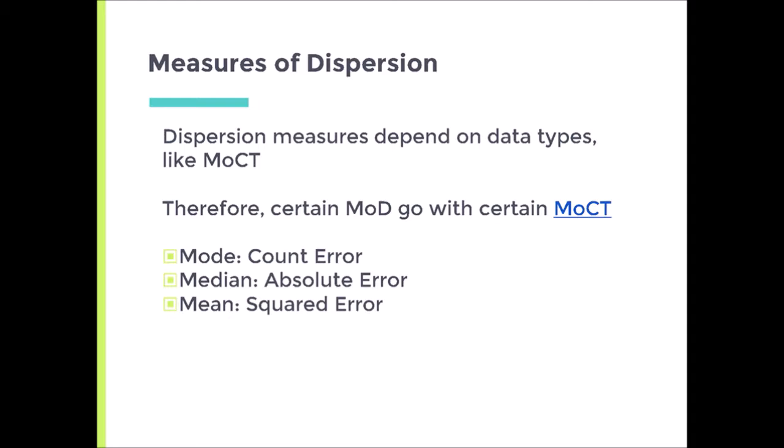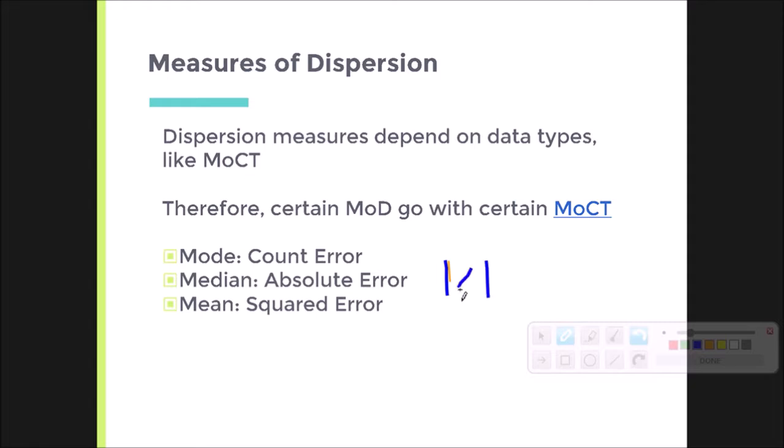The median minimizes what is called the absolute error. So an absolute value is like this - the absolute value of X. And what that means is I always make that value, whatever it was, always a positive value. So if I take a score, some individual score, and I subtract the expected value, in this case the median, which is X tilde, and I get the absolute value of that, that is an absolute error. So what I'm looking at here is the absolute value of the difference between an individual score and the median. The median will minimize absolute error. It's a mathematical truth.